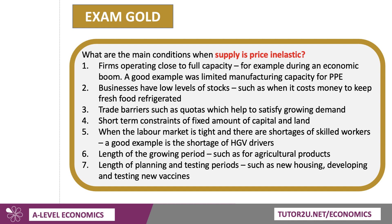Another factor is the length of planning and testing periods. For new housing, supply is typically price inelastic because it takes months to get planning permission — applications are often amended, rejected, and face local opposition. Similarly, the supply of new vaccines during the pandemic took months to develop and test before rolling out at scale. These are the key factors that make supply inelastic; you can reverse these when talking about elastic supply.